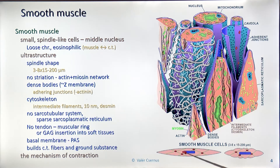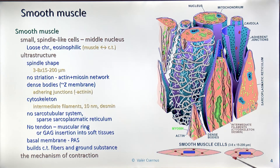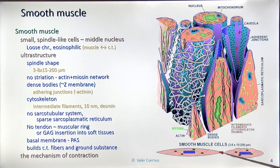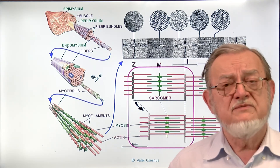There is a very interesting contraction mechanism: the myofilaments are not parallel to each other but make a kind of network, with obliquely opposite points of the membranes connected. Whenever they contract, they look like a wrinkled shape. One advantage of this type of contraction mechanism is that it can contract by much more than the skeletal muscle. That was the general description of the smooth muscle.